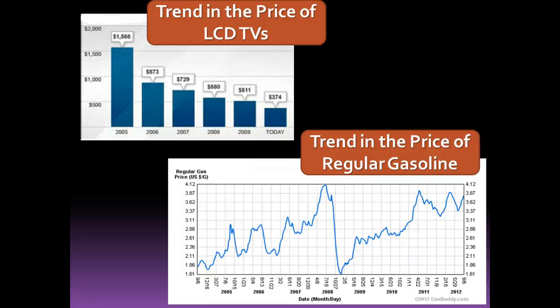When we talk about prices and what prices are doing, it's very difficult to have a single answer to that question without some sort of measure of inflation, because some prices go up and some prices go down. The price for LCD TVs has trended down considerably from 2005, from nearly $1,500 to less than $400 for a comparable TV. At the same time, the price of gasoline has gone up significantly since the mid-2000s, now in the range of $3.50 a gallon versus less than $2 six or seven years ago. So what are prices doing? The answer is it depends on what market you're talking about, but we can have a measure of general tendency, and that's what we mean by measuring inflation.